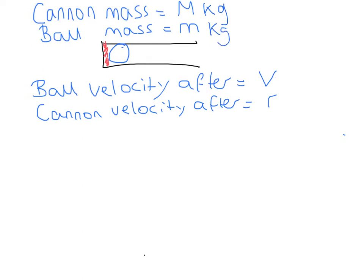The ball velocity after is v meters per second, and the cannon velocity after is r meters per second. I decided to call it r, because we sometimes describe this as the recoil velocity.